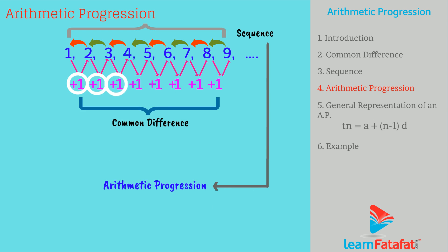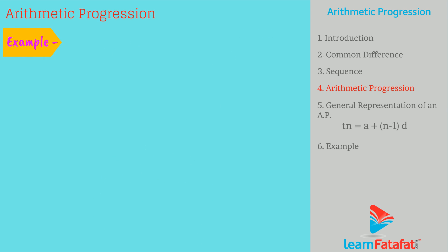Or more simply, if the difference between any two consecutive terms in the given sequence is equal, then it is an arithmetic progression. Now, as you are somewhat familiar with arithmetic progression, that is AP, let us take one more example.